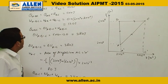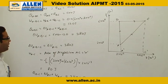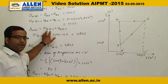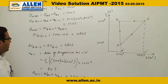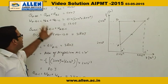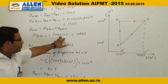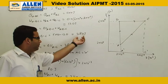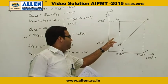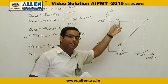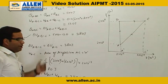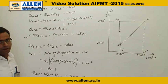Using the first law of thermodynamics, QABC equals delta U ABC plus WABC. Solving, delta U ABC equals 500 minus 120 joules, which equals 380 joules. Since internal energy is a state function, delta U ABC equals delta U AC, which is also 380 joules.